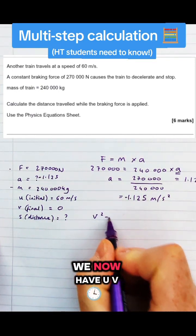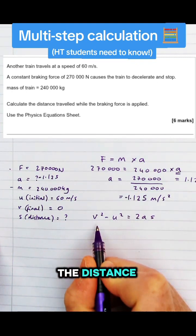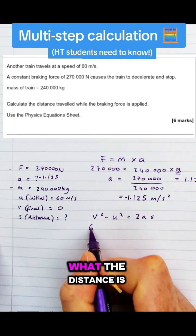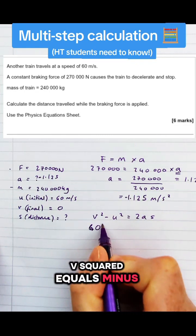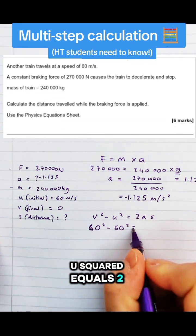Now we've got the acceleration, we now have u, v and acceleration, we don't have s, the distance. We can use this equation to work out what the distance is. v squared minus u squared equals 2as.